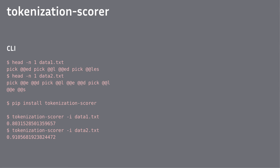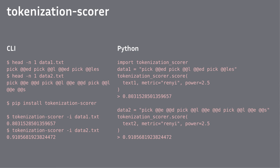We packaged all of these metrics into a tool that you can install with pip. If you have two tokenized files, you can just invoke the tokenization score on both of them and it will give you a number — the higher the number, the better. You can also do the same thing from within Python, and there are a few knobs and parameters to play with or extend. You can read about the Rényi metric and all the math behind it in the paper 'Tokenization and the Noiseless Channel'.